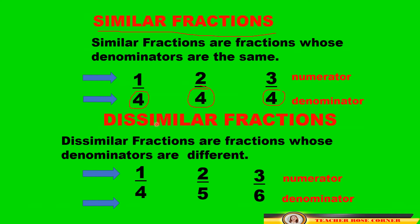How about dissimilar fractions? Dissimilar fractions are fractions whose denominators are different. Let us take a look at these examples: 1 fourth, 2 fifth, 3 sixth. As you can see, the denominators 4, 5, and 6 are different. So we call them dissimilar fractions.